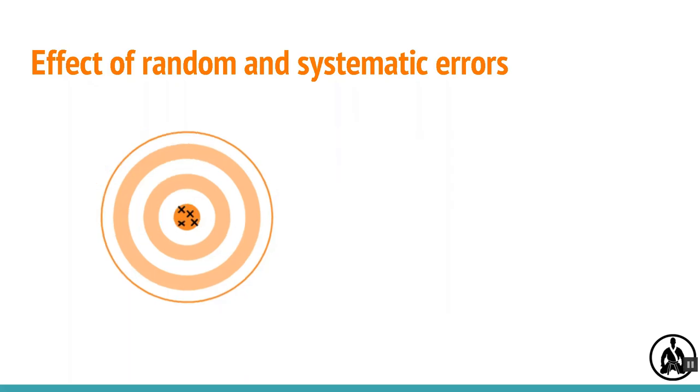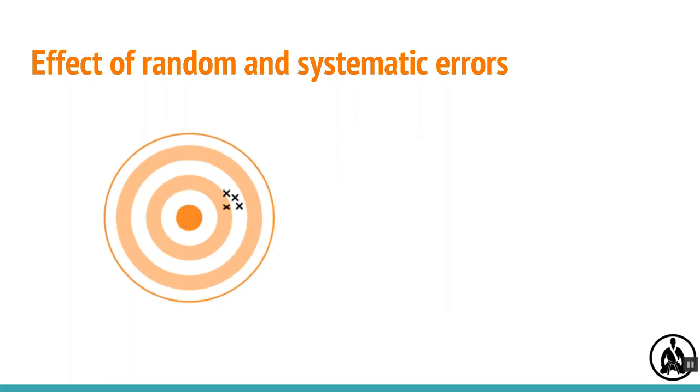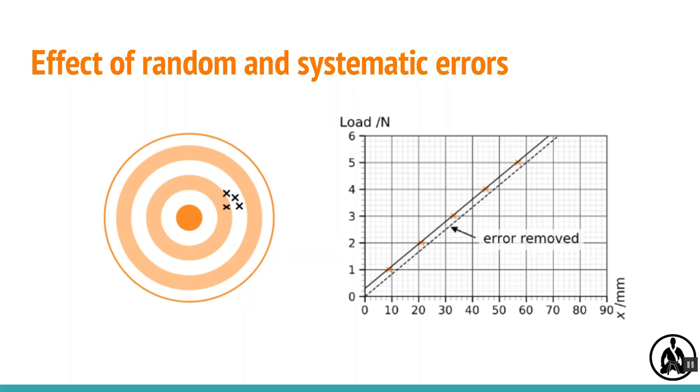Systematic error, meanwhile, moves all your measurements, and so all your points, in a predictable way. So it reduces accuracy, but it doesn't increase scatter or cause repeat measurements to be more different from each other.